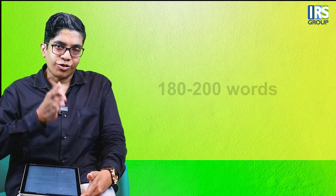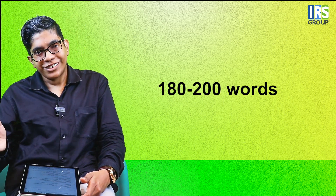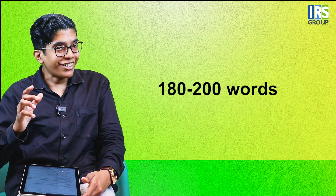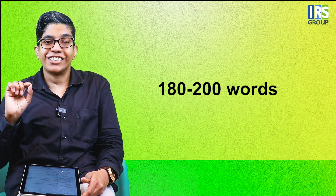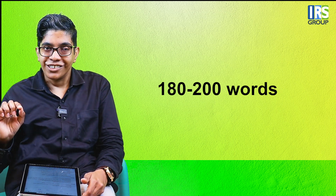The question is about word count in OET writing — how many words should be written, and how it is counted. So this is a big question. Now, generally the rule is that you have to write 180 to 200 words. But that is just a guide, and I will explain what I mean.